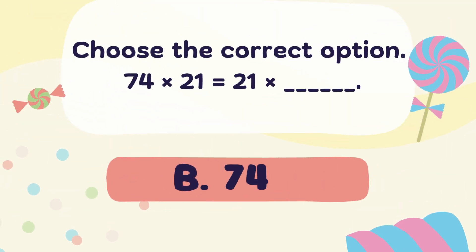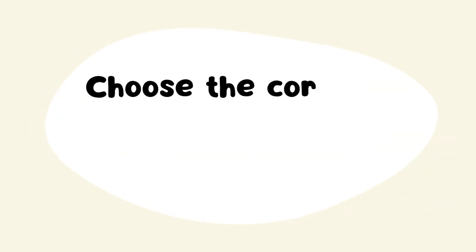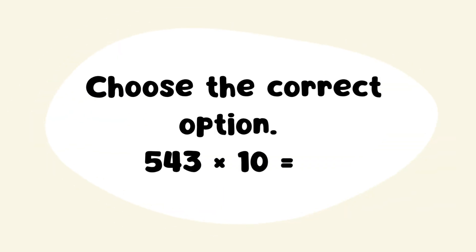Next Question: Choose the correct option. 74 x 21 is equal to 21 x ___. Answer: Option B. 74.